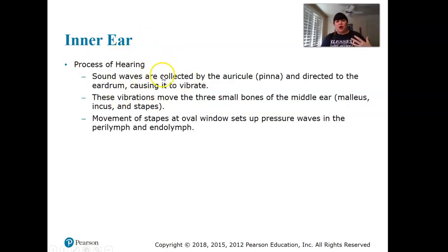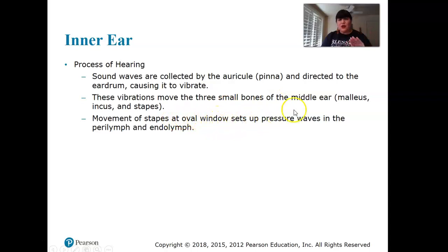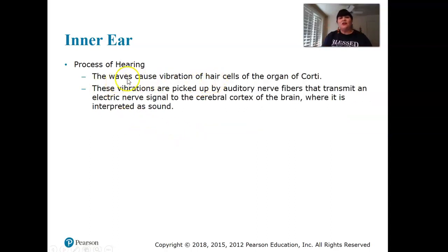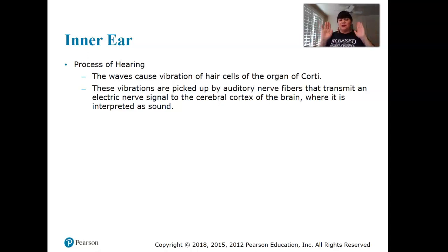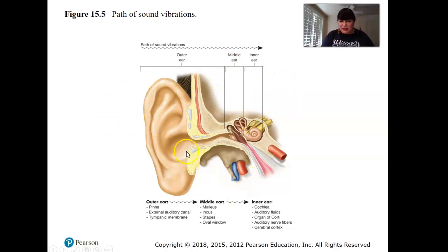Sound waves are collected by the auricle and directed to the eardrum, causing it to vibrate. The vibrations move the small bones of the ear to the oval window, creating pressure waves that move the fluid in the inner ear, which stimulates the hair cells in the organ of Corti in the cochlea. These vibrations are picked up by the auditory nerve, which transmits electrical signals to the cerebral cortex, where they are interpreted as sound.